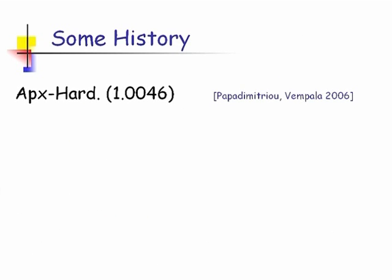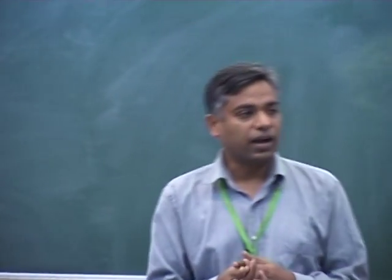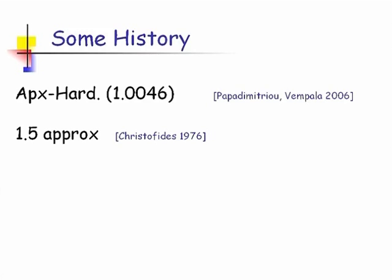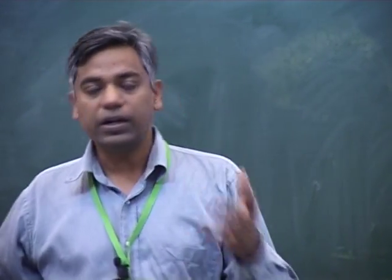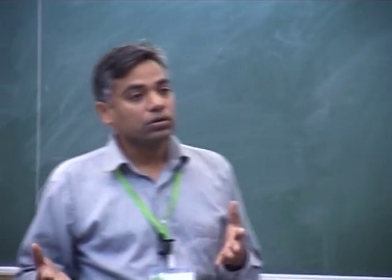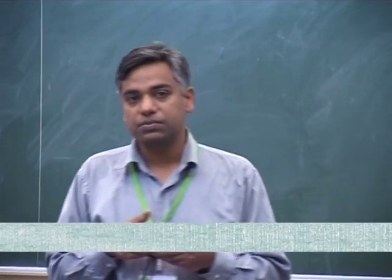Some history: the problem is NP-hard, shown by Papadimitriou and Vempala, so it's hard to approximate. For the metric version — where the graph is complete and the edges satisfy the triangle inequality — the best result known is a 1.5 approximation by Christofides. Many of you might have read this in your undergraduate classes.